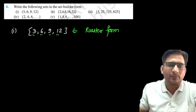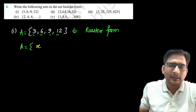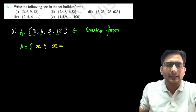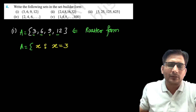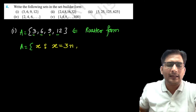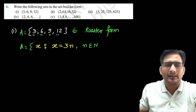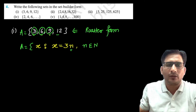Suppose this is set A. To write set A in set builder form, we write: x, then semicolon, then we define x. Looking at the pattern — 3, then 6, then 9, then 12 — these are multiples of 3. So we can write x = 3n, where n is a natural number. When n = 1 we get 3, n = 2 gives 6, n = 3 gives 9, and n = 4 gives 12.